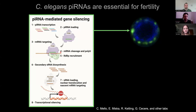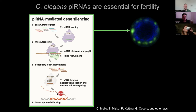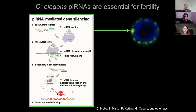In worms, piRNA-mediated silencing requires an amplification step: RNA-dependent RNA polymerases are recruited to the target transcript, synthesizing secondary small RNAs using the RNA molecule as a template. These secondary small RNAs are perfectly antisense to the targeted transcript. They are in turn loaded into a nuclear Argonaute effector called HRP1, which translocates to the nucleus and can promote transcriptional silencing through unknown mechanisms that may be related to the deposition of repressive chromatin marks.